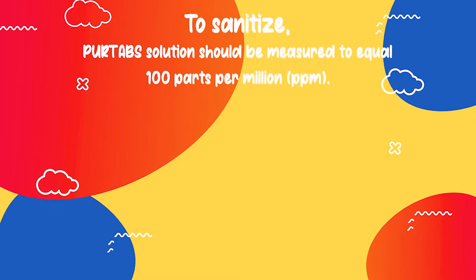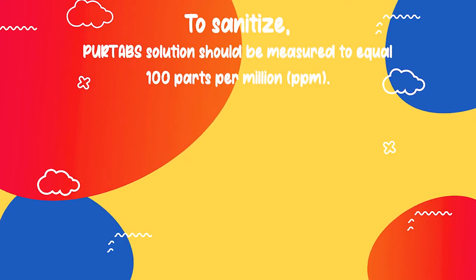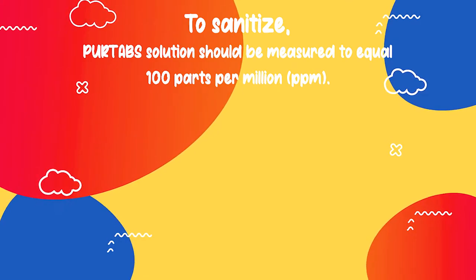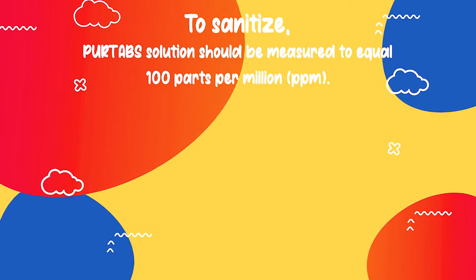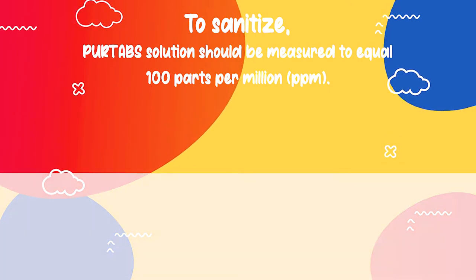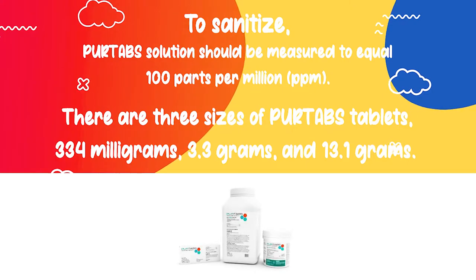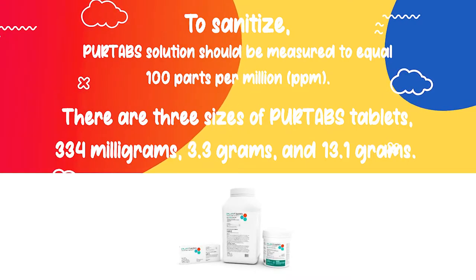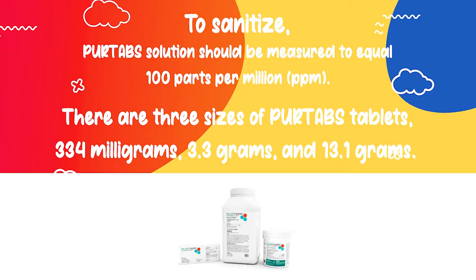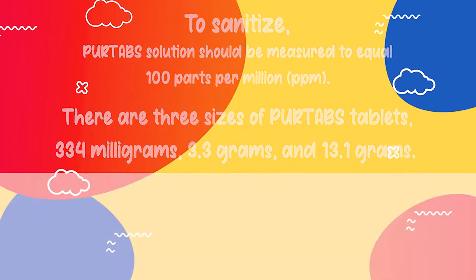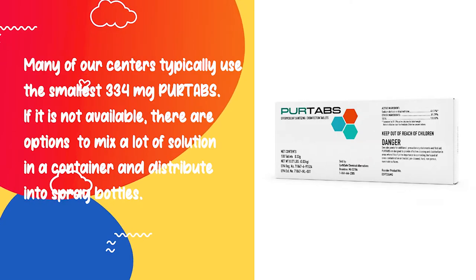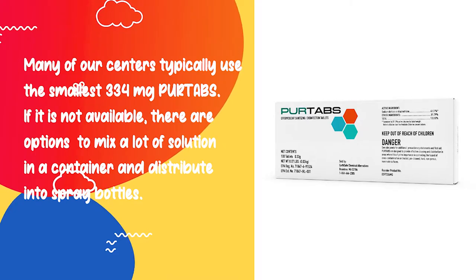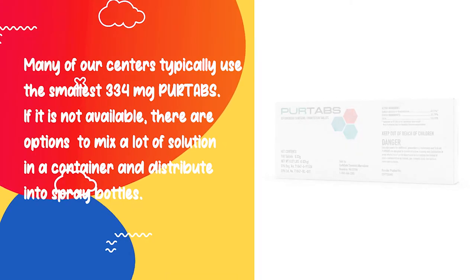To sanitize, the Pure Tabs solution should be measured to equal 100 parts per million (ppm). To make this food contact surface sanitizer solution, simply drop a Pure Tabs tablet into water. There are three sizes of Pure Tabs tablets: 334 milligrams, 3.3 grams, and 13.1 grams. Many of our centers typically use the smallest 334 milligram Pure Tab. If it is not available, there are other options to mix a larger solution in a container and distribute into spray bottles.